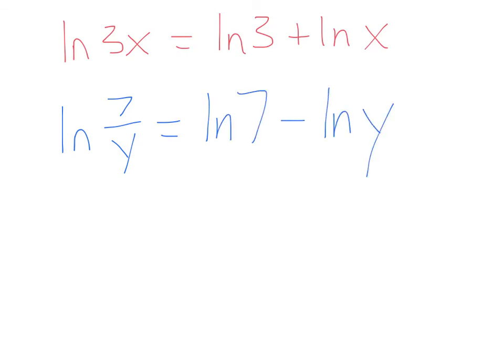All the properties of logarithms still apply to natural logs as well. If you had natural log of 3x, this is equivalent to the natural log of 3 plus the natural log of x. That's the product property of logarithms. The quotient property, natural log of 7 over y, you can still write that as natural log of 7 minus natural log of y. The power property, the natural log of x to the fifth would be 5 times the natural log of x. Everything is the same. If you understand all the rules with logarithms, then you already understand all the rules with natural logs. It's just that the base of these logarithms is this irrational number e.